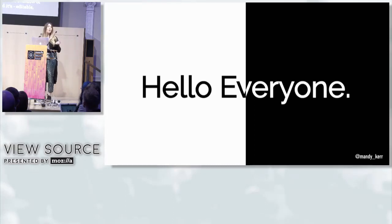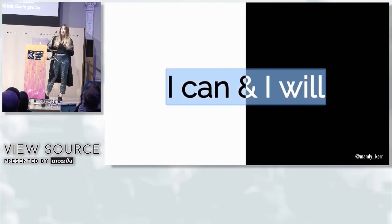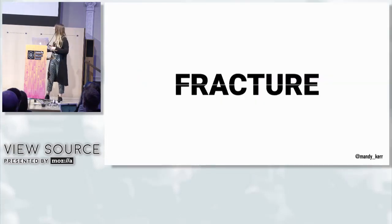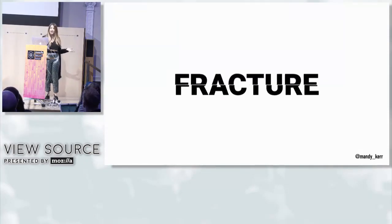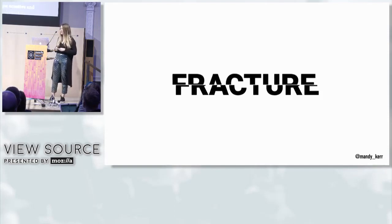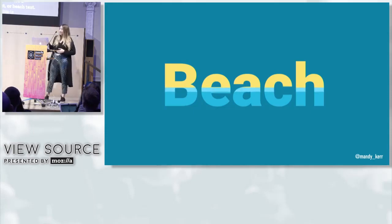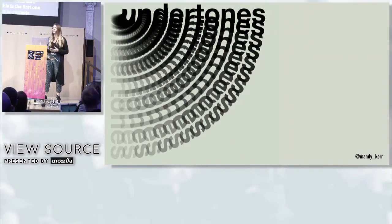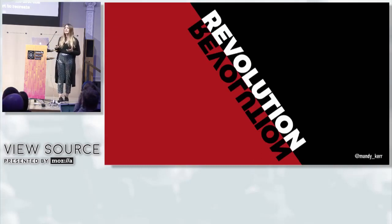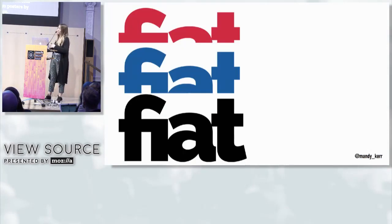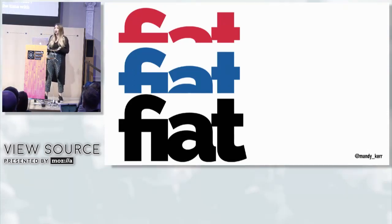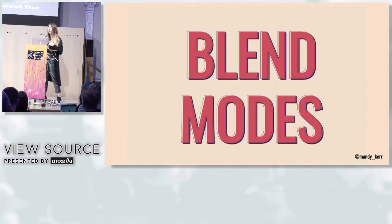Once you start doing this with properties that have been available for many years, you can get a little creative — creating fractured text using two pseudo elements, rainbow text, beach text. You can even start to recreate things you might have seen in Swiss design posters by rotating, reflecting, and transforming things. This is all stuff we do all the time with squares and rectangles — we can just do it with text as well.